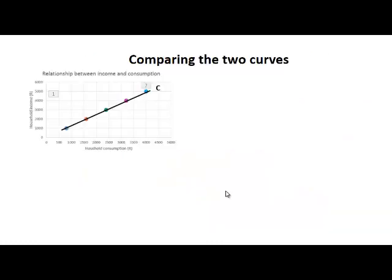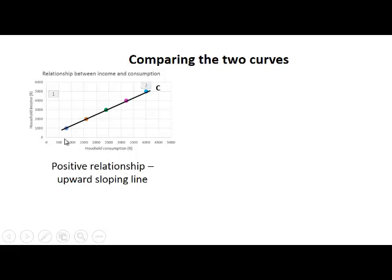In the previous two sets of slides we showed the relationship between income and consumption. This is a positive relationship - when household income increased, household consumption also increased. This is reflected in the upward sloping line that we see on this diagram.